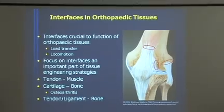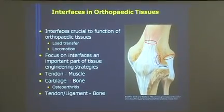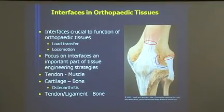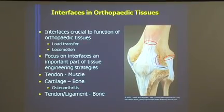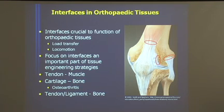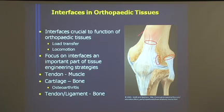What do I mean by orthopedic interfaces? Interfaces in orthopedic tissue engineering have been, to date, somewhat overlooked, but they represent areas where different orthopedic tissues come together. I have some of them highlighted here with the red circles. We're talking about things like muscle to tendon, ligament to bone, and cartilage to bone.